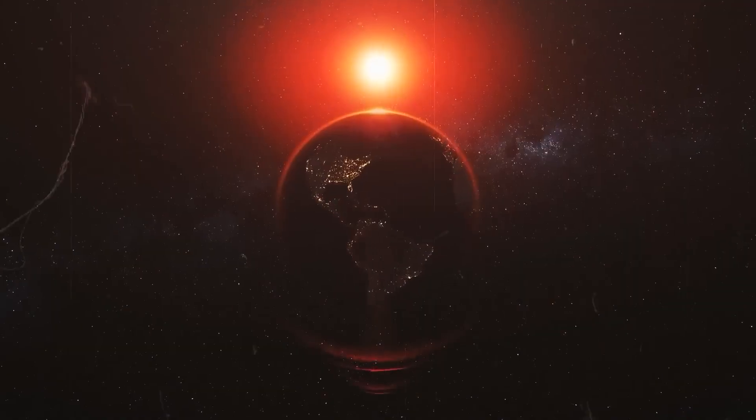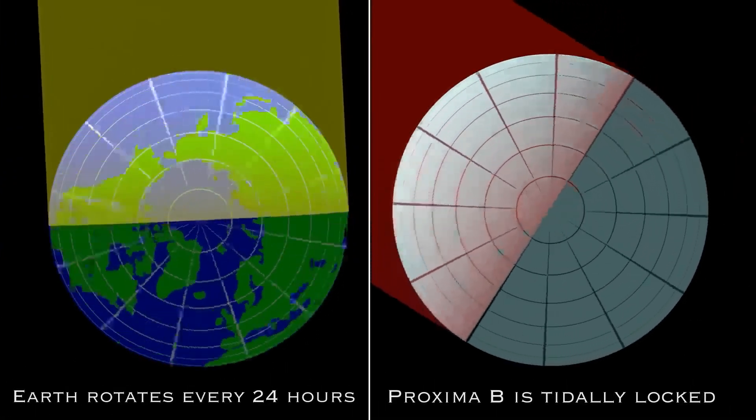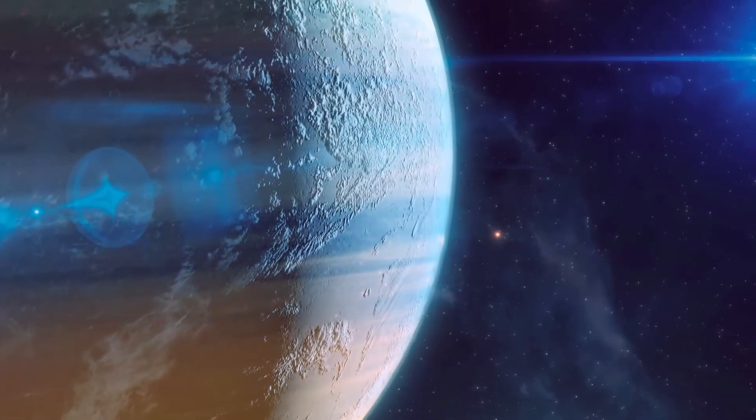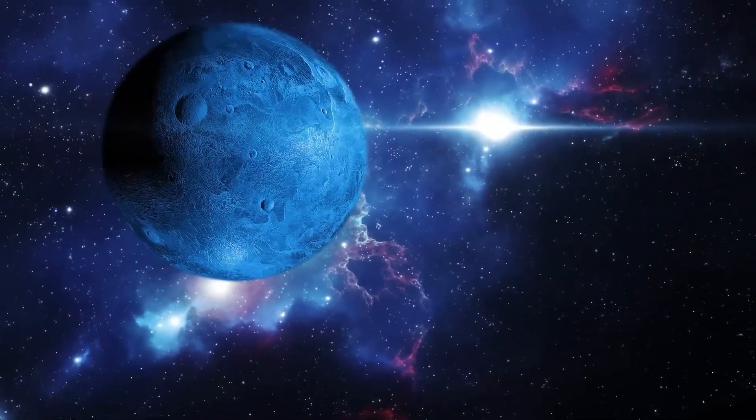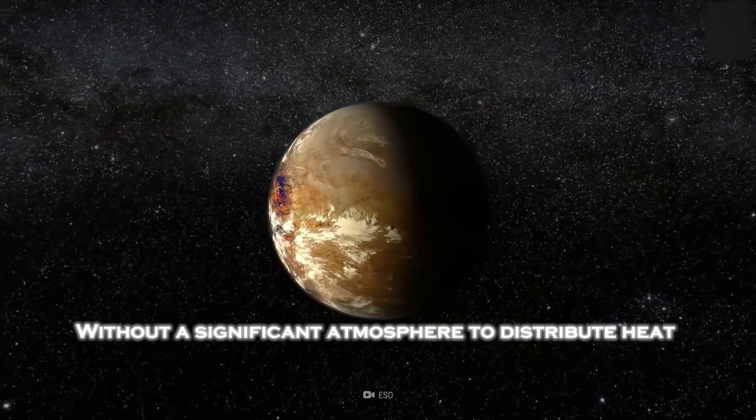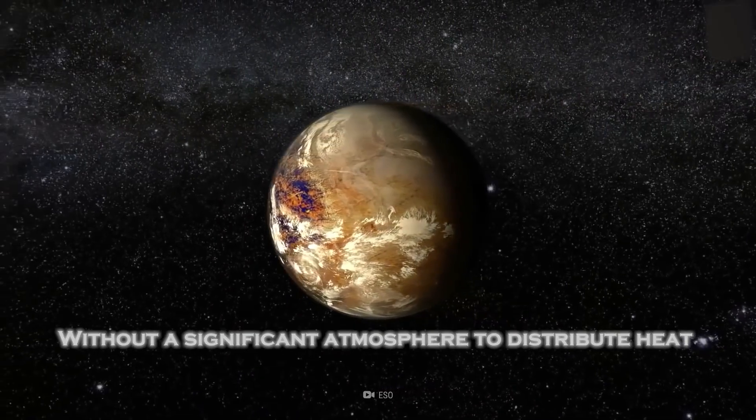Proxima b's tidal locking creates a planet of extremes, perpetual daylight on one side and freezing darkness on the other. The dark side's temperature could plummet to levels that make life as we know it impossible. Without a significant atmosphere to distribute heat.